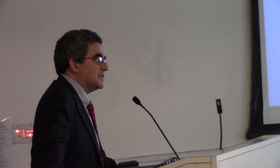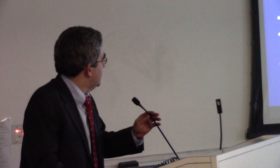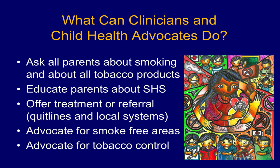There is abundant evidence from the early tobacco industry behavior that by creating a false scientific debate, it delays or weakens effective regulation. If you're interested, there's a good book by Proctor out of Stanford and Alan Brandt's book on the tobacco generation. For example, the tobacco industry spent almost $2 million preventing an ICD disease coding category for secondhand smoke exposure and delayed that for about six or eight years. So what can clinicians and child health advocates do? We can ask all parents about smoking and other tobacco products. We can educate parents about the risks. We can offer treatment or referral, and we can advocate for smoke-free areas and for tobacco control investments.